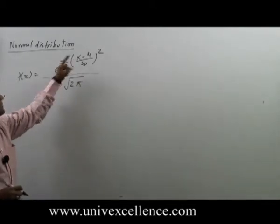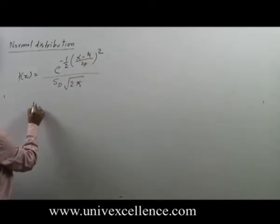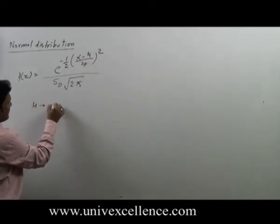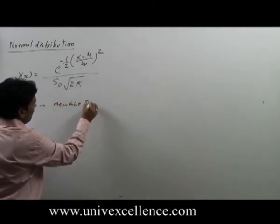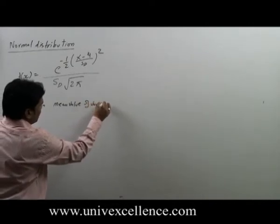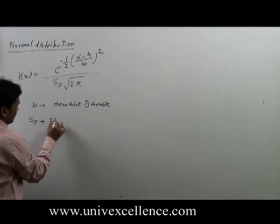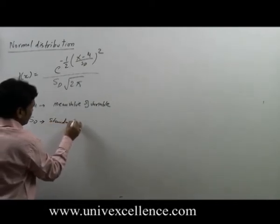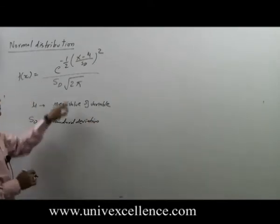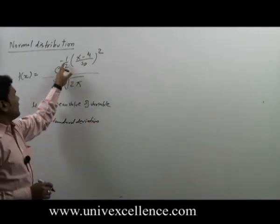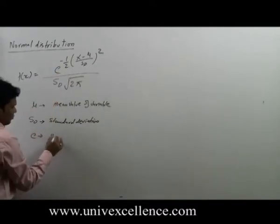This x is the random variable. Mu is the mean value of the variable. This sd is the standard deviation. 2 pi is constant, half is constant, and here e is 2.71828.